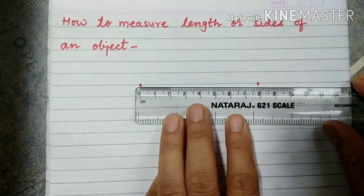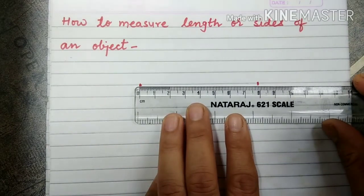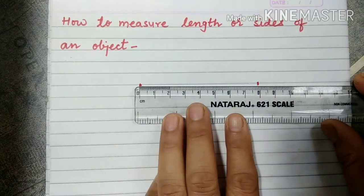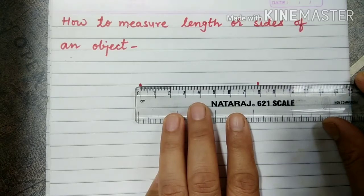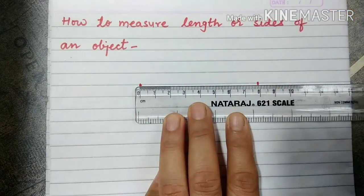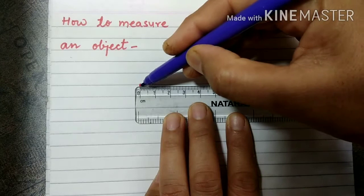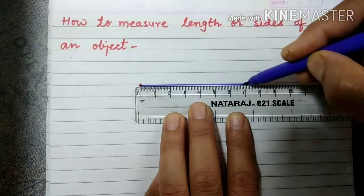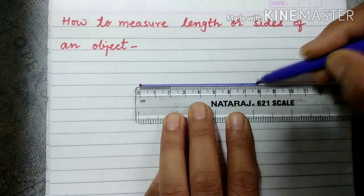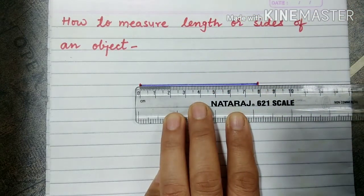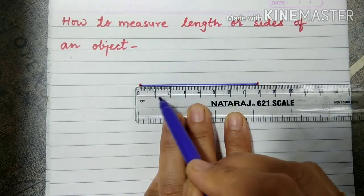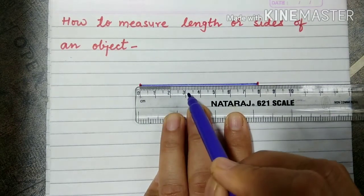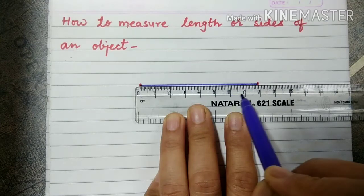Very carefully join both the dots. After joining the dots, we will measure the line segment. While measuring the line segment, we have to keep the zero of the scale at one of the dots. Now let's count: one, two...